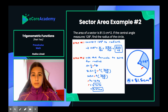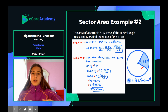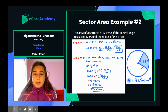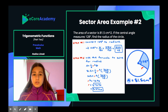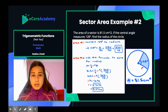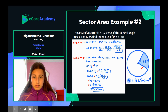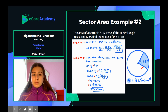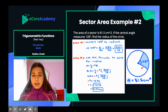Sector area example number 2: the area of a sector is 81.5 centimeters squared. The central angle measures 128 degrees — find the radius of the circle. Since the angle is in degrees, we need to convert to radians first: 128 degrees times pi over 180 equals 128 pi over 180, which reduces to 32 pi over 45.